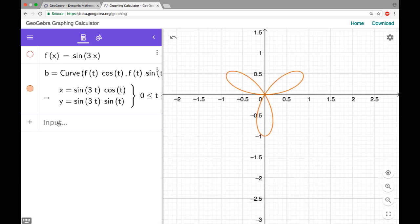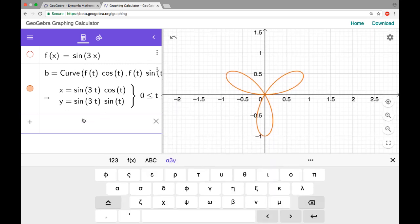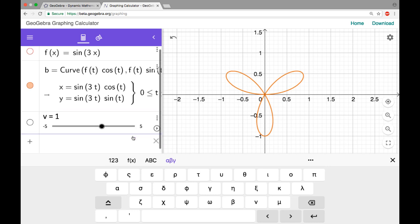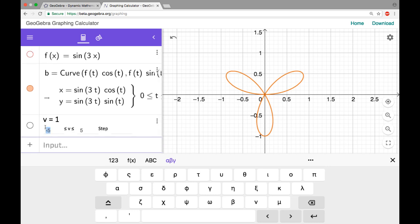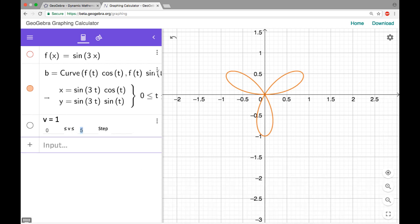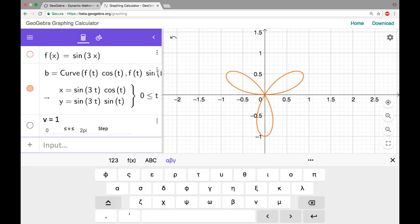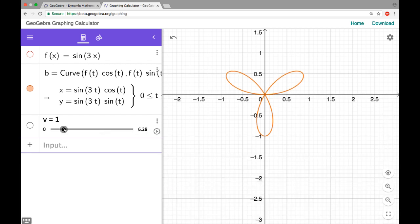Like maybe I want to see how it's traced out, so two options for that. One of them is I'm gonna type v and just create a slider, and I'm gonna have the slider go from 0 to 2 pi. And I can move that, that's good.